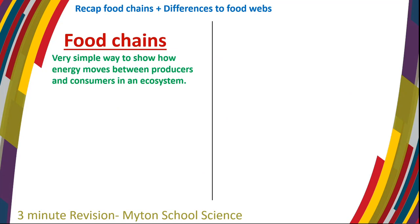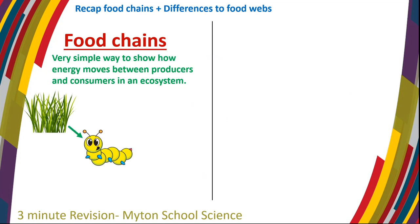Let's have a recap of food chains. Food chains are a very simple way to show how energy moves between producers and then the consumers within an ecosystem. In my example here, we've got grass that's eaten by a caterpillar, which is eaten by a blackbird. That's a simple food chain. What this shows us is that energy created by the producer is then passed to the caterpillar when the caterpillar eats the grass, which is then passed to the blackbird when the blackbird eats the caterpillar.